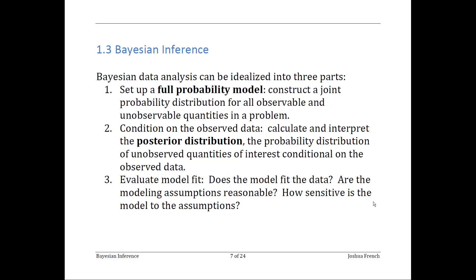Lastly, after you've constructed your posterior distribution, you need to evaluate the fit of your model to the data — in other words, perform a sanity check that your model adequately describes the behavior of the observed data. Double check your assumptions. Is there a more realistic or useful model to fit? How sensitive are your results to the probability model that you set up? After considering that third step, it may cause you to go back and change some of the initial steps and reiterate through the process.